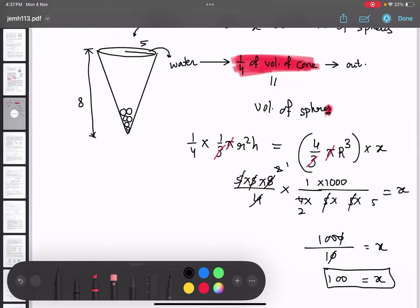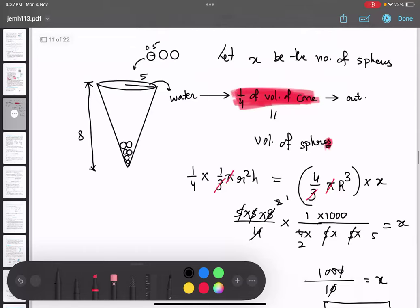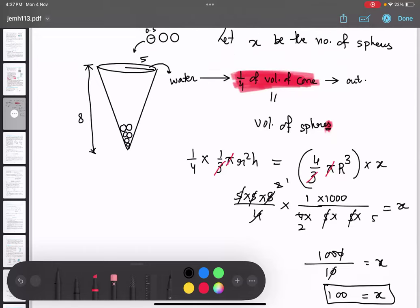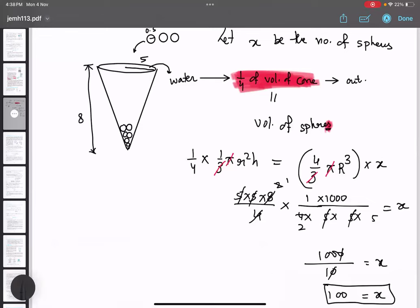Now, the important thing is not this question. The important thing is how I proceeded with this question. Can you see I am canceling it out? I am not substituting. The student who will start substituting the values and start multiplying, I am telling you, you are going to take a lot of time to do this question. And high chances are, you are not going to get the answer. The student who will substitute the value of π, 22/7 or 3.14, I am telling you, you are not going to get the answer at all. Why?